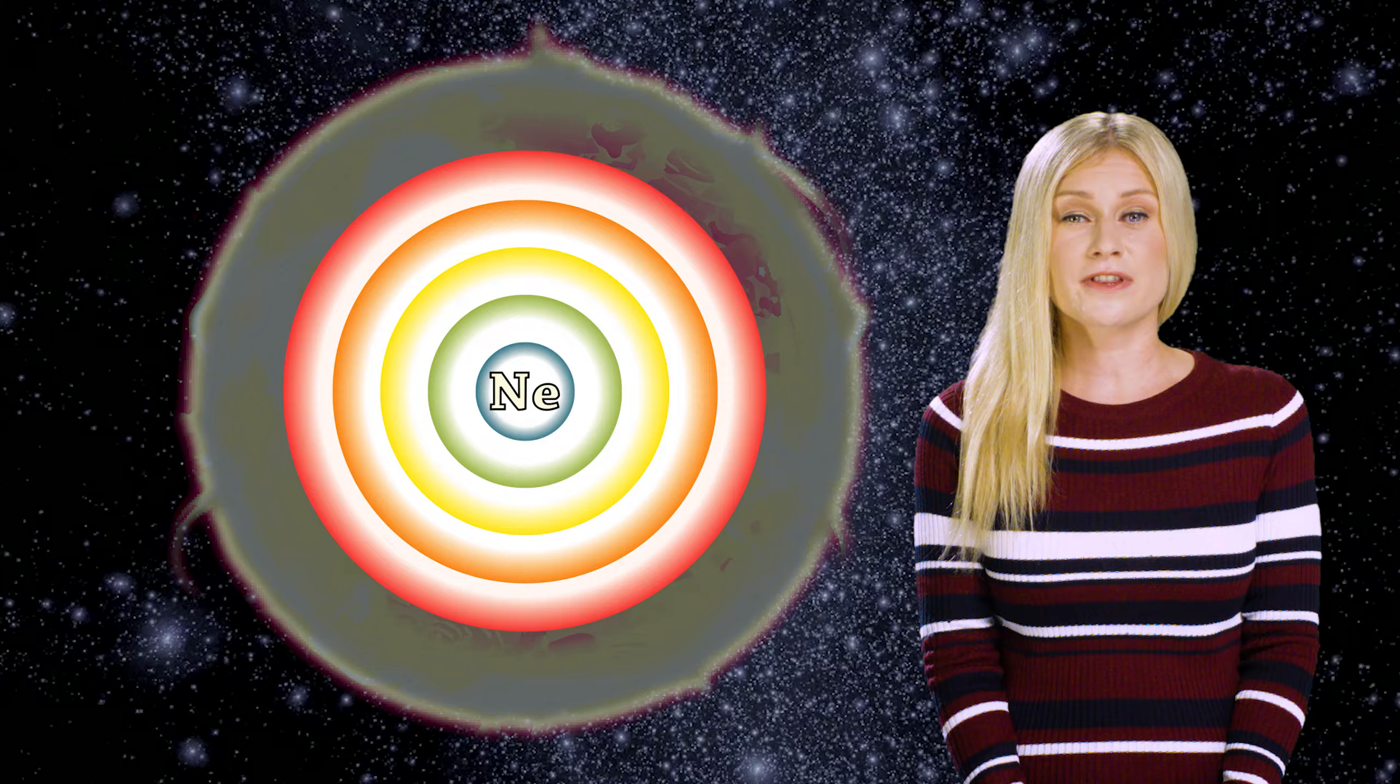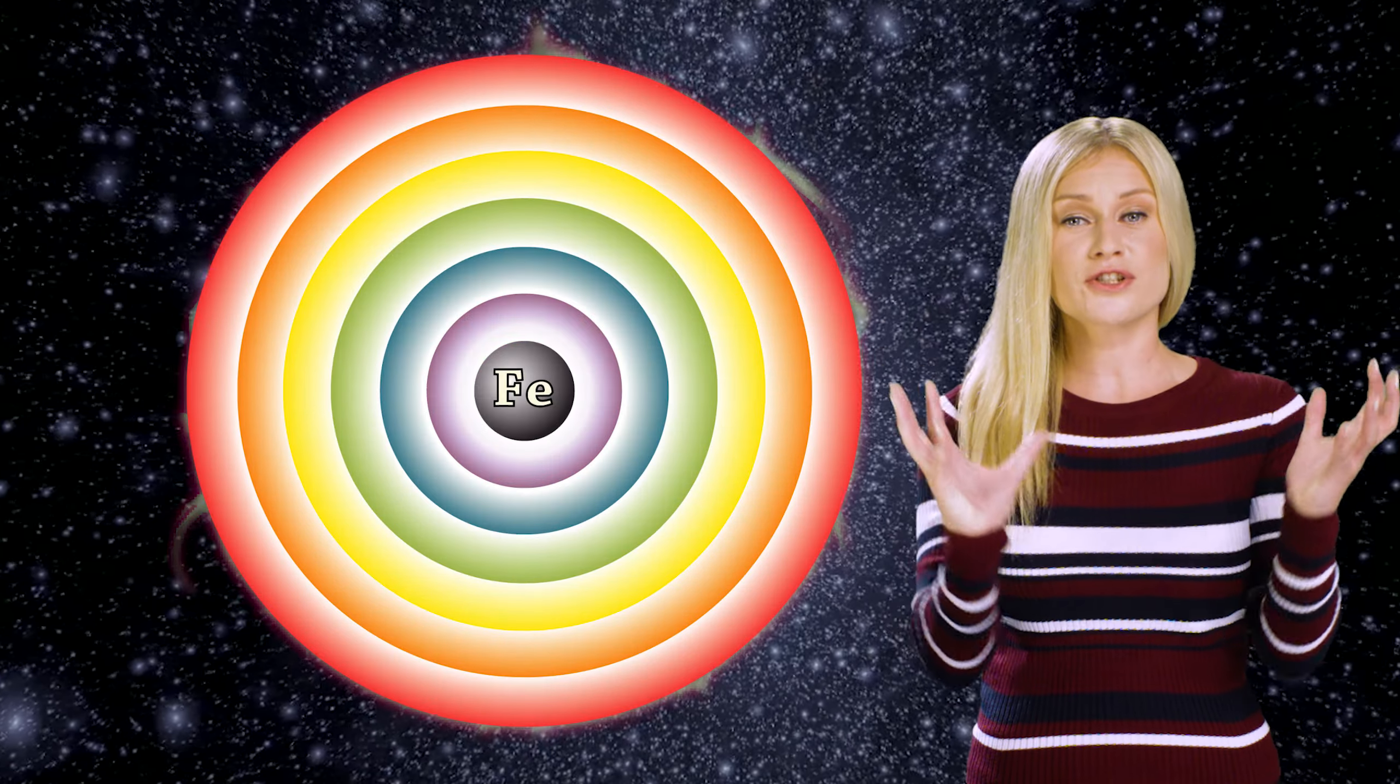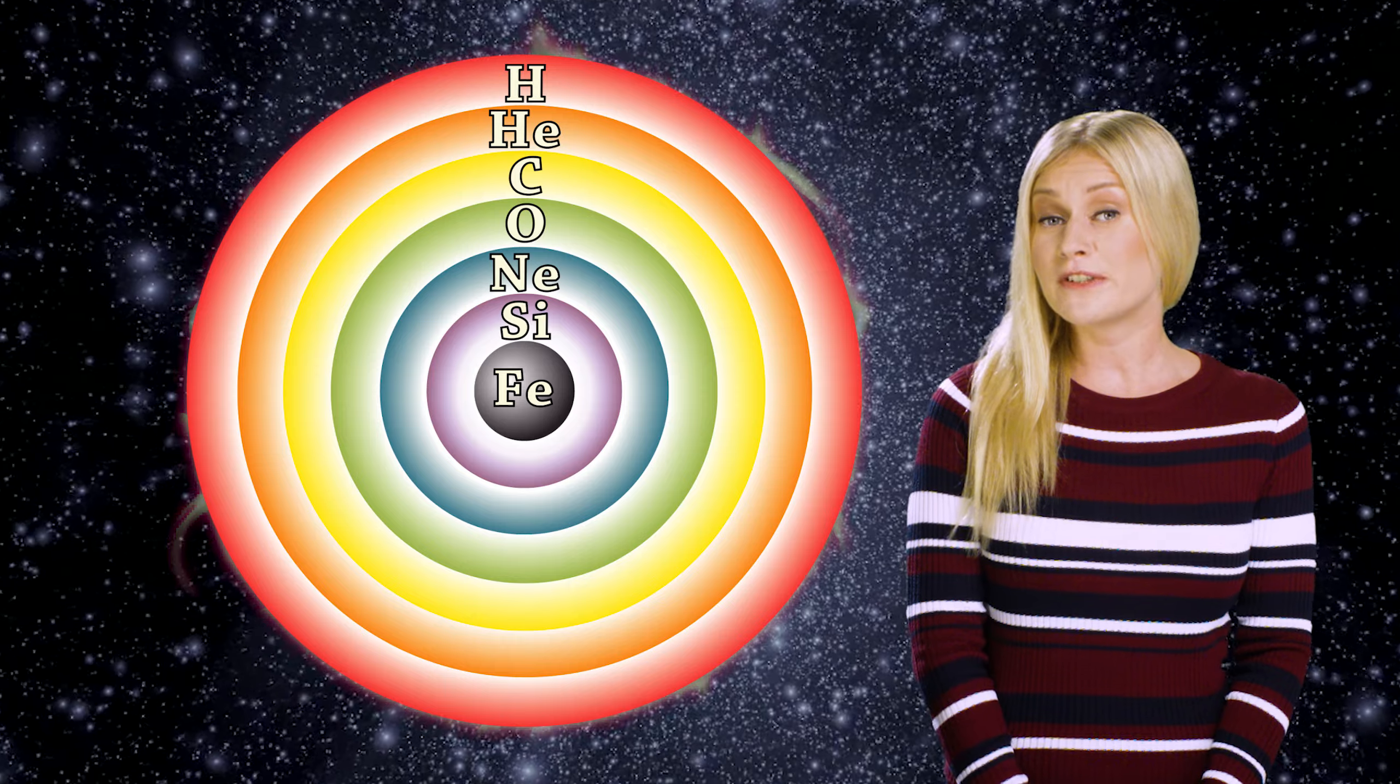Then they move on to fusing helium to carbon, then carbon to oxygen, oxygen to neon and so forth until you're left with a core of iron surrounded by an onion structure of layers from previous burning cycles.